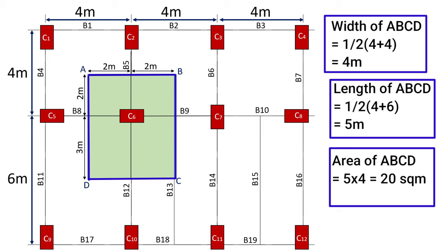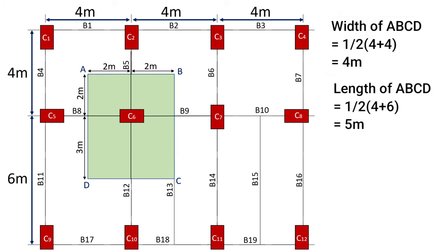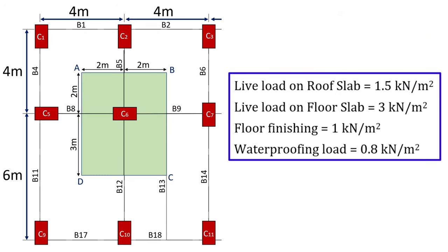Now let's assume some data as per the code. Live load on roof slab is 1.5 kN/m², live load on floor slab is 3 kN/m², floor finishing is 1 kN/m², and waterproofing load is 0.8 kN/m².